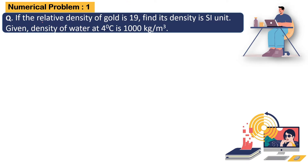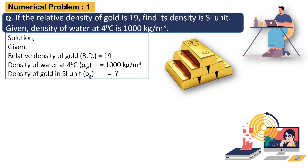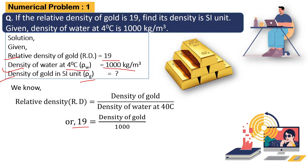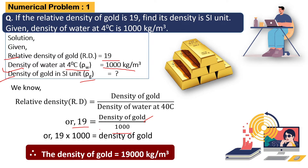Numerical Problem 1: If the relative density of gold is 19 and the density of water at 4 degrees Celsius is 1,000 kg per meter cube, find the density of gold. Using the formula: relative density equals density of gold divided by density of water at 4 degrees Celsius. Relative density is 19, density of water is 1,000, so density of gold equals 19 multiplied by 1,000 equals 19,000 kg per meter cube.